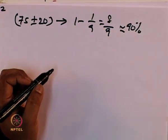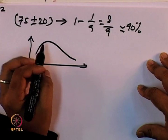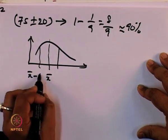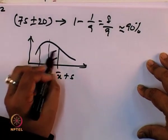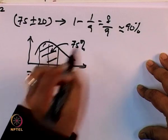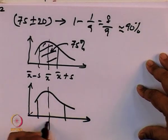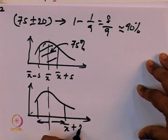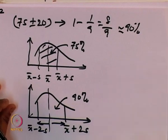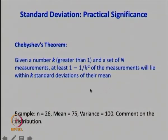As stated last class, for a generic distribution, Chebyshev's theorem is actually a very conservative estimate. It gives roughly 75 percent within x-bar plus or minus S, and 90 percent within x-bar plus or minus 2S. Chebyshev's theorem is very conservative because it does not make any assumptions about how the distribution of data looks.